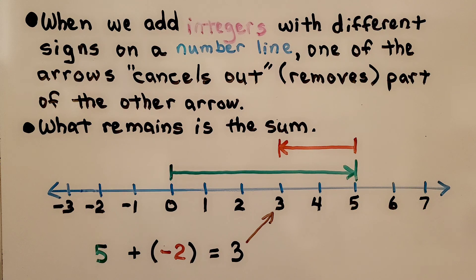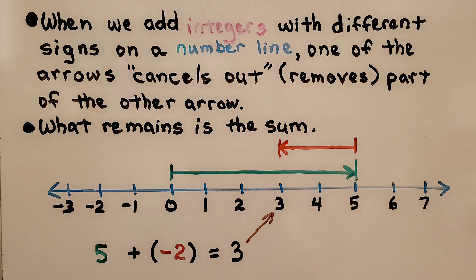When we add integers with different signs on a number line, one of the arrows cancels out — it removes part of the other arrow. What remains is the sum.